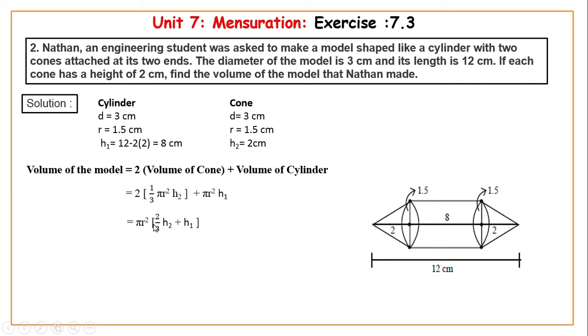So the remaining answer is 2 by 3 h2 plus h1. The corresponding value is pi, which is 22 by 7. That is 1.5 into 1.5, then 2 by 3 into h2, which is 2, plus h1, which is 8.